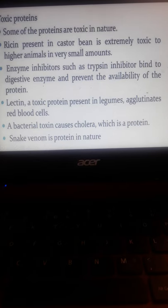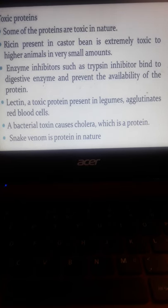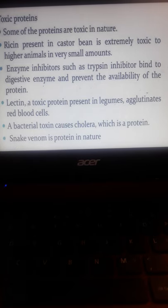Toxic proteins: some proteins are toxic in nature. Ricin is found in castor oil. It is considered very toxic and hazardous. Enzyme inhibitors like trypsin inhibitors bind to digestive enzymes and prevent the availability of protein. If they bind, there is no trypsin. Trypsin is responsible for digestion of food. If there are inhibitors called trypsin inhibitors, it will slow down the digestion process, so it is toxic if the food is not digested. Lectin, a toxic protein found in legumes, agglutinates red blood cells. Lectins can coagulate. Bacterial toxin causes cholera, for example.